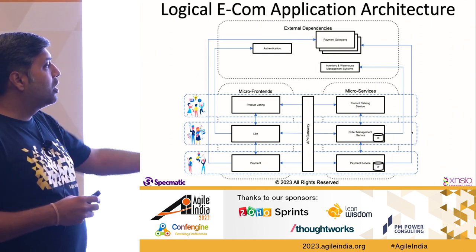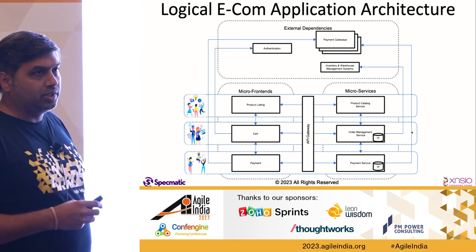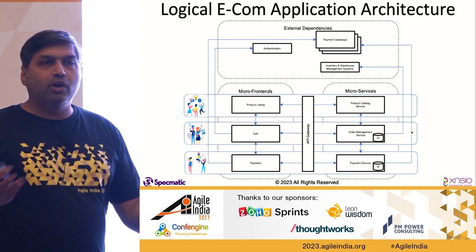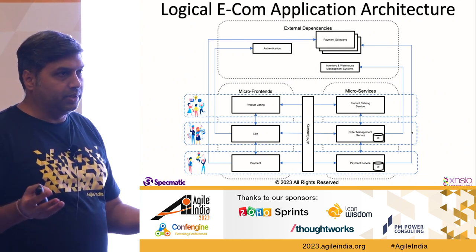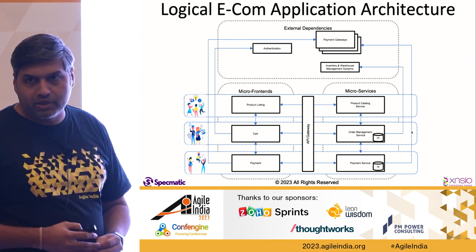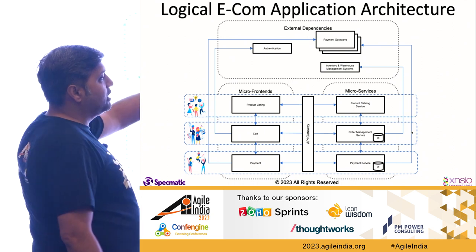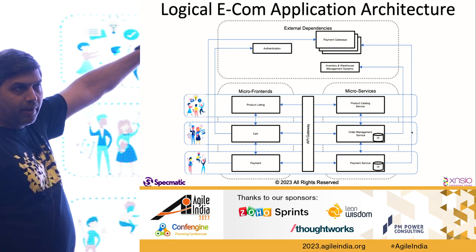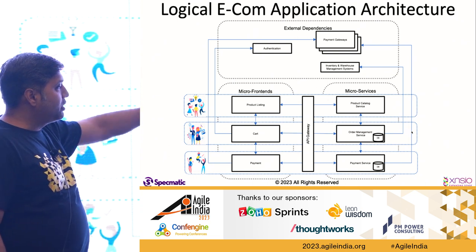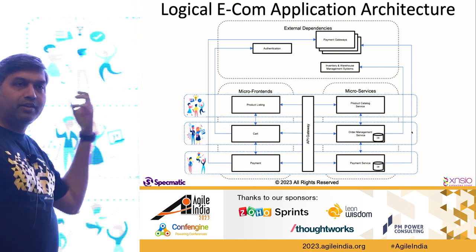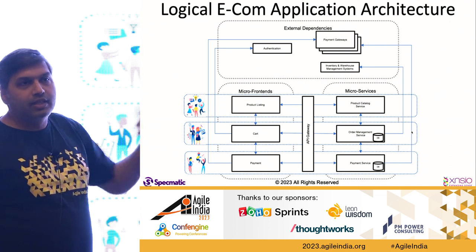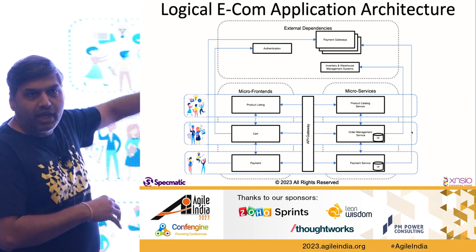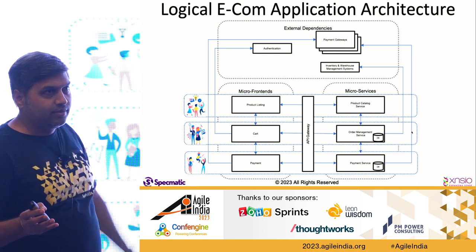Cross-team changes, right. Let's take an example: I want to introduce a new category of products and for that category I do not want to offer cash on delivery as a payment option. What changes? Your product catalog and product listing will change. There's also an inventory management external dependency that changes. And for that product, you need your payment gateway to not return the cash on delivery option.